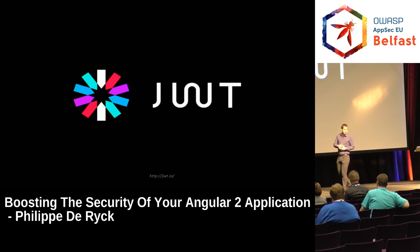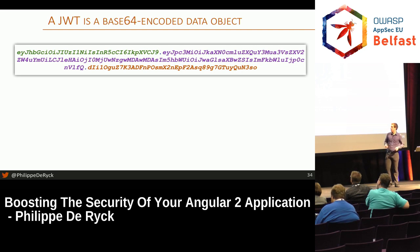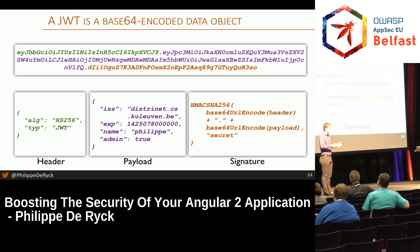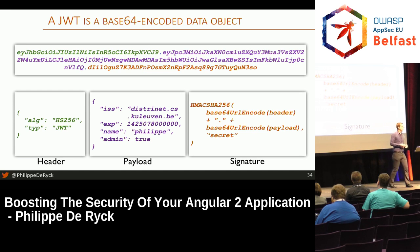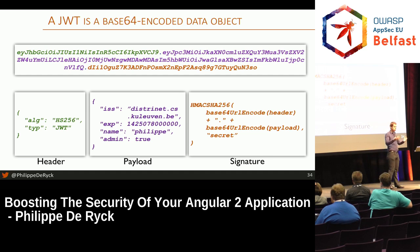Who here uses JWT tokens? Okay, people are waking up — just in time. JWT tokens are officially an open industry standard for representing claims securely between different parties. Essentially, a JWT token looks like this — three different parts: a header, a payload, and a signature. It's JSON, so it's easy to process with JavaScript. The important part is the payload, which has all the information you want to store. There are some reserved fields — who issued it, when it expires — but you can also add custom fields there.